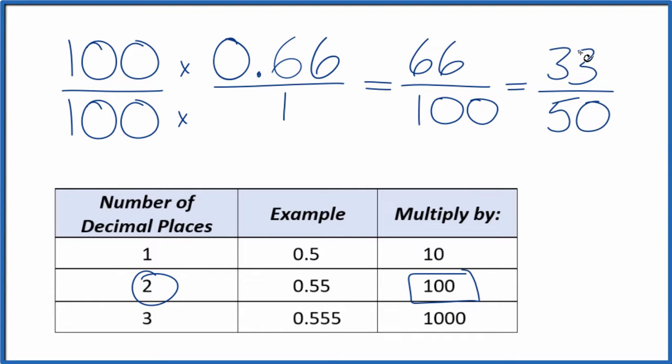So the fraction 33 over 50 is equal to the decimal 0.66. If you divide 33 by 50, you'll get 0.66.